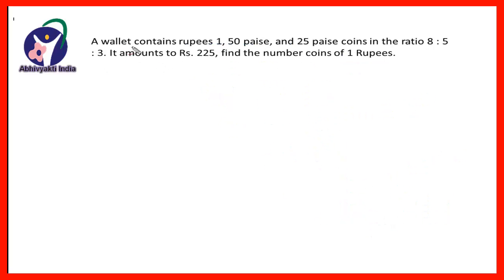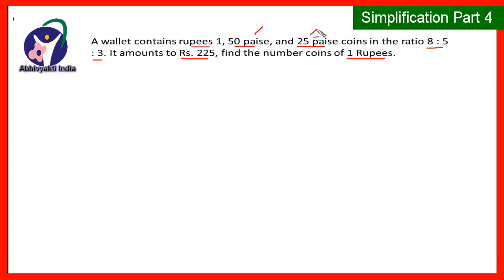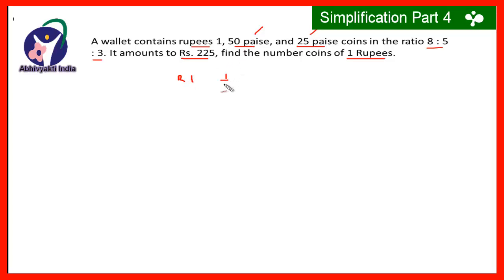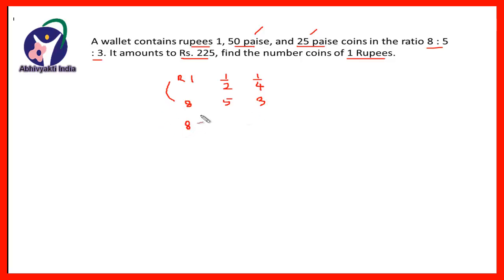Now the next question: a wallet contains rupees 1, 50 paise and 25 paise coins in the ratio 8:5:3. It amounts to rupees 225. Find the number of coins of 1 rupee. Here the denominations are in both rupees and paise, so first we convert all to rupees: 1 rupee stays as 1, 50 paise is half a rupee, and 25 paise is one-fourth of a rupee. These are in the ratio 8:5:3, so the values are 8×1 = 8, 5×(1/2) = 5/2, and 3×(1/4) = 3/4.